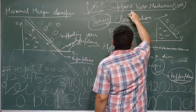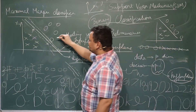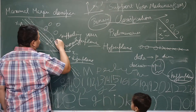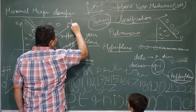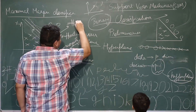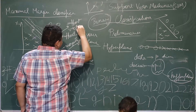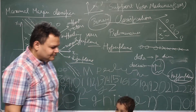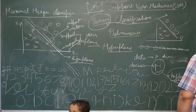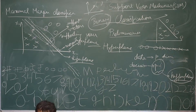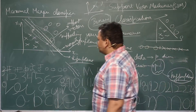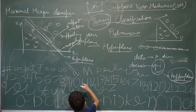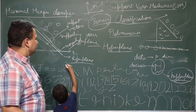That is where 'support vector machine' comes from. These three points are your support vectors. Now this is the description of a maximal margin classifier — let us describe it more mathematically.